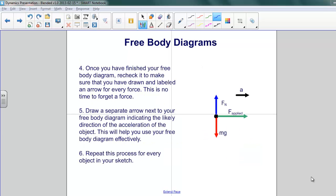When you've finished your free body diagram, check it to make sure you've drawn and labeled an arrow for every force and that all the forces are pointing in the right direction. Next, draw a separate arrow next to your free body diagram to indicate the likely direction of the acceleration of your object. This will help you use your free body diagram effectively when you're trying to work through your equations involving acceleration and force. Repeat this process for every object in the system that you're looking at.